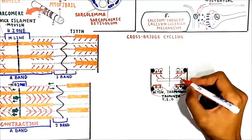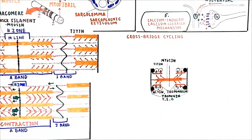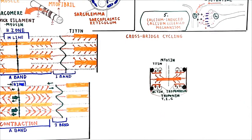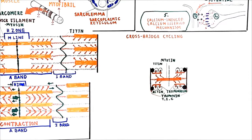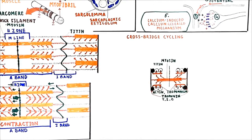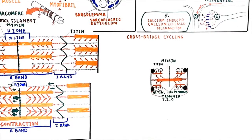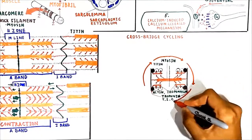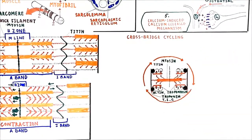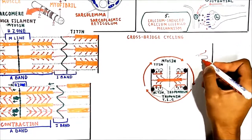The thick filament is composed of myosin, which is bound by titin. Myosin, located in the center of the sarcomere, has two heads attached to a single tail. Titin is another protein which anchors myosin and is an important component of striated muscle elasticity. There are four major steps involved in cross-bridge cycling in a contracting muscle.